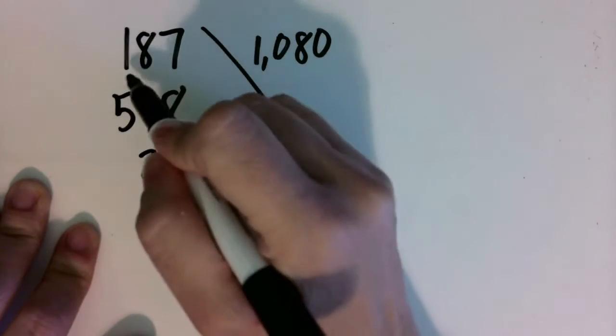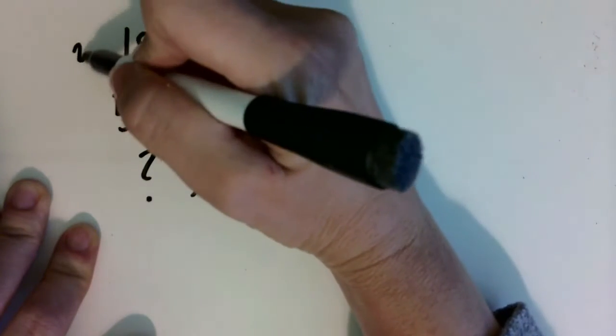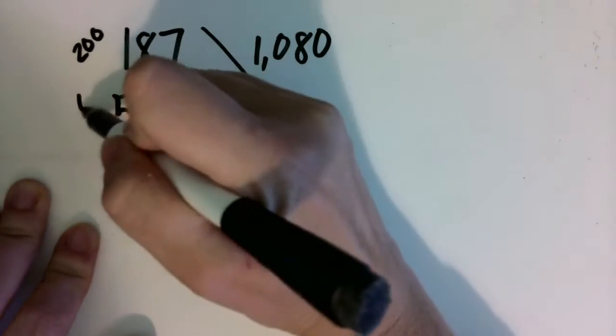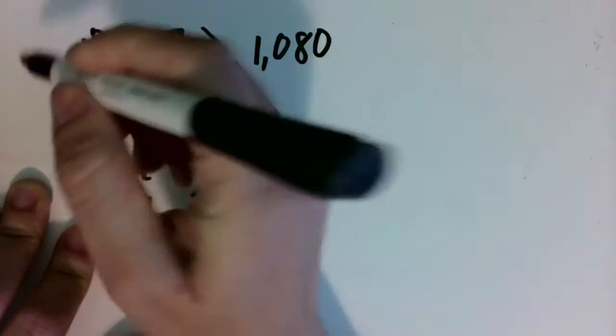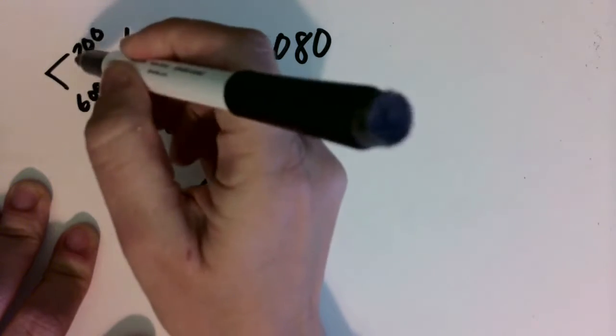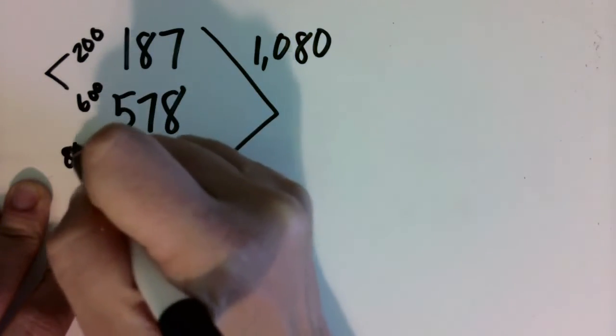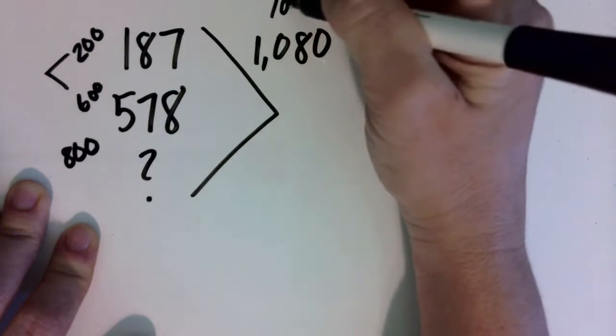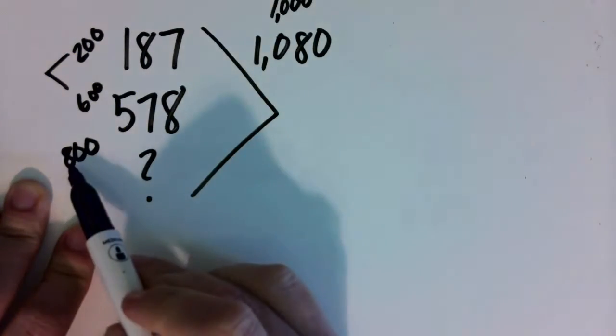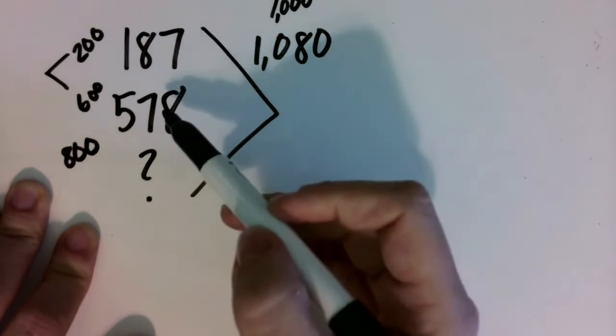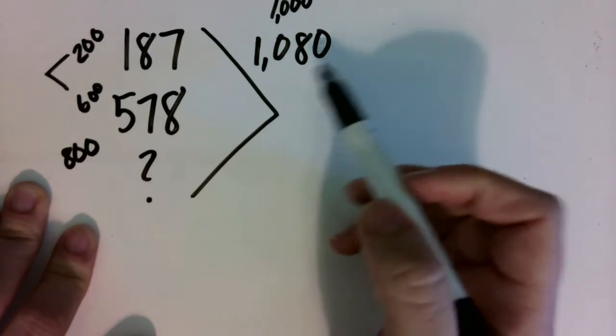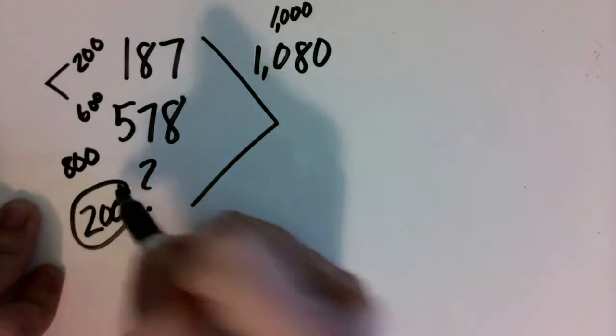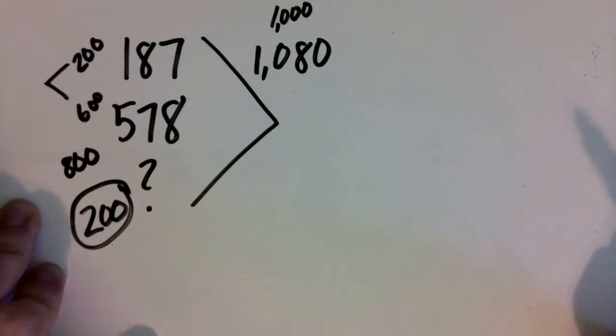So let's make an estimate first. $187 is close to $200. $578 is close to $600. Together, that's close to $800. $1,080 is close to $1,000. If I were to take the amount I know away from the total, I'd say my side tables are about $200.